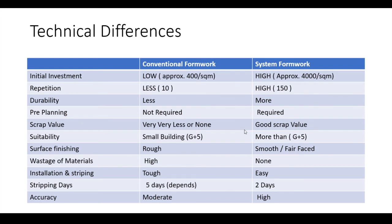For suitability: you can use conventional formwork for G+5 and above, but the time taken is more. A building that takes 2 years with conventional formwork can be completed in 1 year with system formwork. For small buildings, the high initial investment of system formwork is not justified. For surface finish: after concrete curing with conventional formwork, plastering is required; but with system formwork you get a smooth fair finish, saving plastering work and cost. Material wastage in conventional formwork includes nail holes, off-cuts, and wood waste; panel formwork produces almost none.